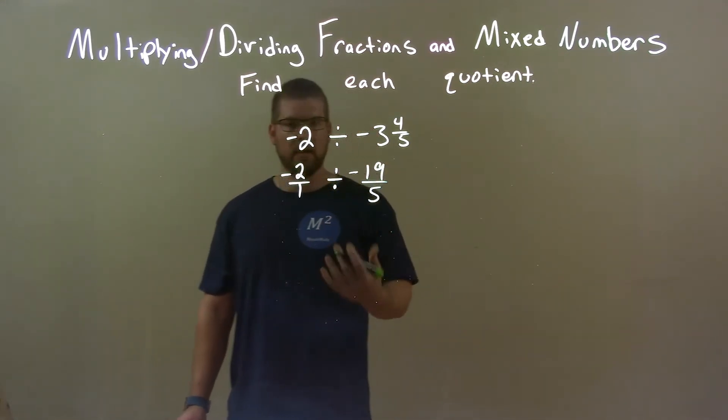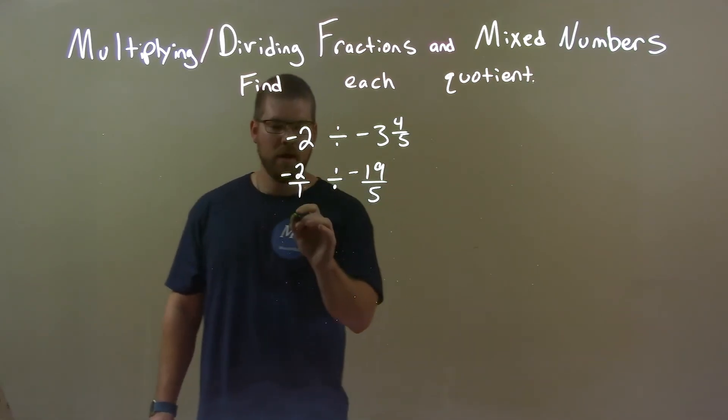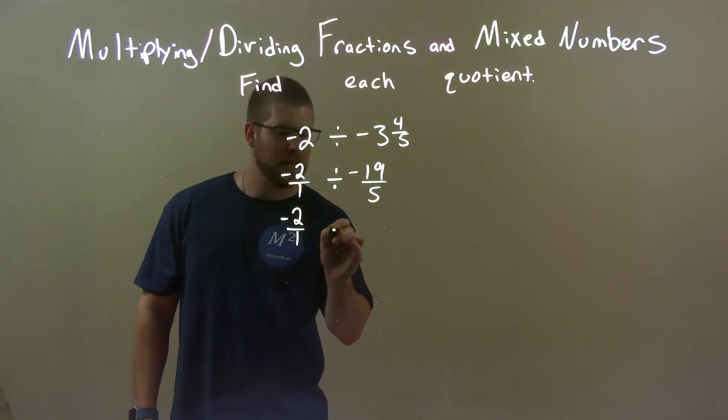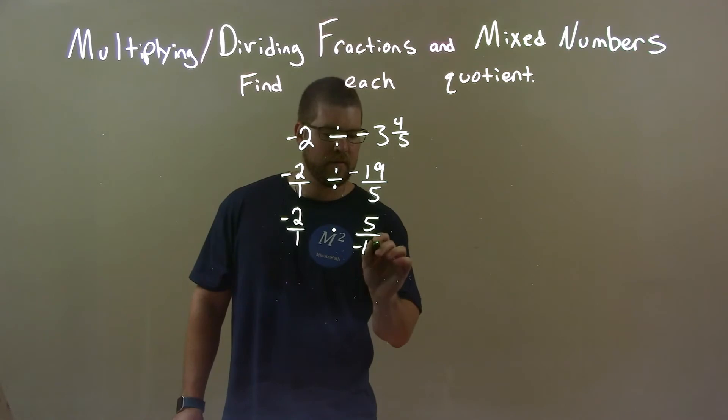Now if you're like me, this is the way I like to do it. I hate dividing fractions, I prefer multiplying. So negative 2 over 1 times, multiply it, let's flip that fraction. 5 over negative 19.